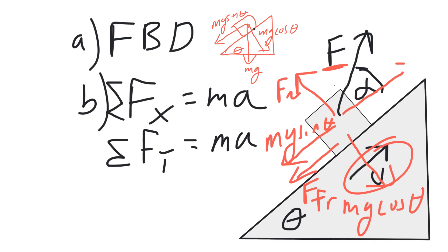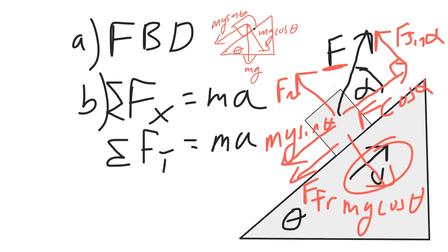Part of the applied force is pulling the block up the ramp, and part of it is pulling the block up off the surface of the ramp. We have a nice right triangle here. So the component along the ramp is F cosine of alpha — that's the adjacent side — and the component perpendicular to the ramp is F sine of alpha. As you can see, this is a big mess, so let's clean this up a little bit.